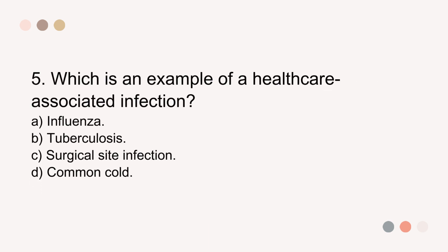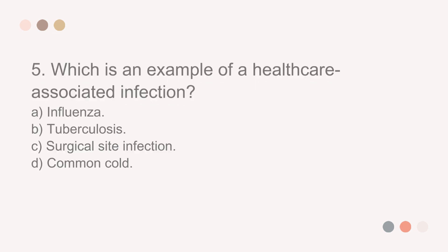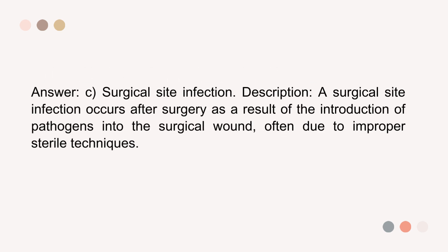Question 5. Which is an example of a healthcare-associated infection? A. Influenza. B. Tuberculosis. C. Surgical site infection. D. Common cold. The answer is C. Surgical site infection. Description: A surgical site infection occurs after surgery as a result of the introduction of pathogens into the surgical wound, often due to improper sterile techniques.